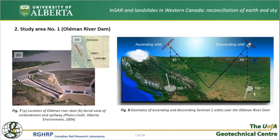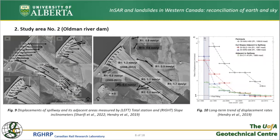The first study area is the Old Man River Dam, located in the south of Alberta, 80 km east of Lethbridge. Dam construction was completed in 1992, but ongoing displacements of the spillway and its adjacent areas were identified from the very beginning of construction in 1986. Previous studies reported several weak clay seams beneath the structure at different elevations with residual friction angles of 11 to 15 degrees. Alberta Ministry of Environment and Parks, along with other consultants, installed slope inclinometers and extensometers to monitor spillway displacement. For this site, almost 300 SAR images archived by Sentinel-1 were analyzed, covering years 2014 to 2021.